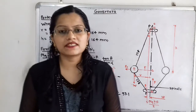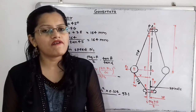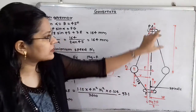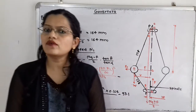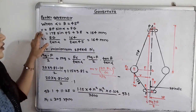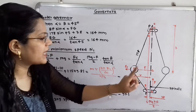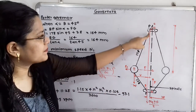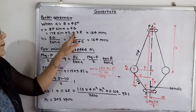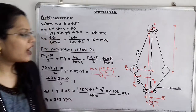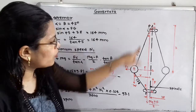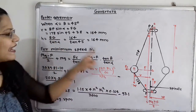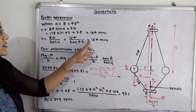We now find the maximum and minimum speeds when angle alpha equals angle beta equals 45 degrees. First, we calculate R: BF = BP × sin(45°) = 178 × sin(45°), so R = BF + FG = 178 × sin(45°) + 38 = 164 mm. Then H = BG / tan(45°) = 164 / 1 = 164 mm.